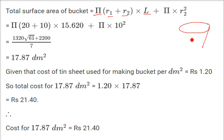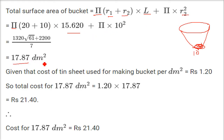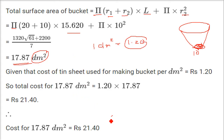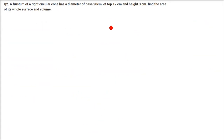Since it's a bucket, this side is open — we only include the bottom circle (r2 = 10). So we use: π(20 + 10) × slant height + π × 10². This gives 17.87 decimetre square. For 1 decimetre square the cost is 1.20, so the total cost = 1.20 × 17.87 = 21.40.